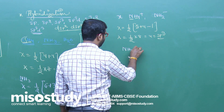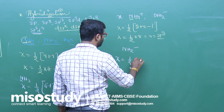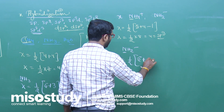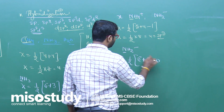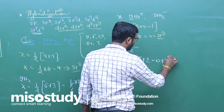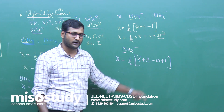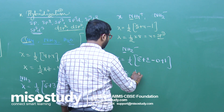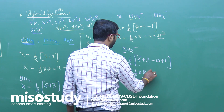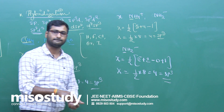For NH2−, we have a negative charge. x = 1/2 × (valence electrons of nitrogen + monovalent atoms + negative charge) = 1/2 × (5 + 2 + 1) = 1/2 × 8 = 4. So hybridization of NH2− is again sp³. If there were 2 negative charges, you would add 2 instead.